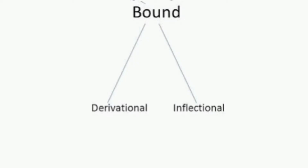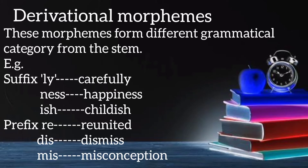Bound morphemes are further divided into derivational and inflectional morphemes. Derivational morphemes form a different grammatical category from the stem. For example, the suffix '-ly' in 'carefully' changes a noun into an adverb; the suffix '-ness' in 'happiness' changes an adjective into a noun; the suffix '-ish' in 'childish' changes a noun into an adjective. Similarly, the prefix 're-' in 'reunited', 'dis-' in 'dismiss', and 'mis-' in 'misconception' are all derivational morphemes.